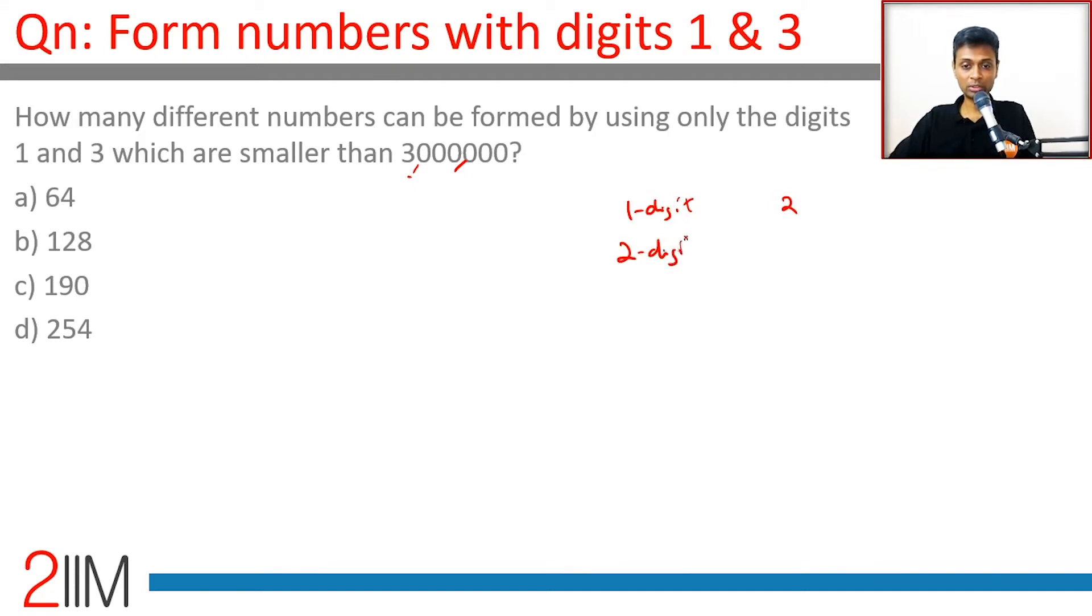Three digit numbers: eight numbers. Each digit could be 1 or 3, it could be 1 or 3, this could be 1 or 3, very simple.